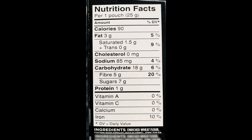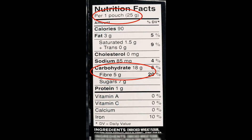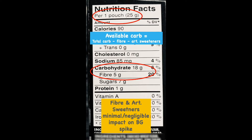Quick tip on food labels in regards to carb counting. First thing you want to look at is the serving size, next is the carbohydrate content, fiber, and artificial sweetener. From here we're going to calculate the available carbohydrate — we take the total amount of carbohydrate, which is 18 grams, minus the fiber and minus any artificial sweeteners. We have no artificial sweeteners here, so we don't take that into account.